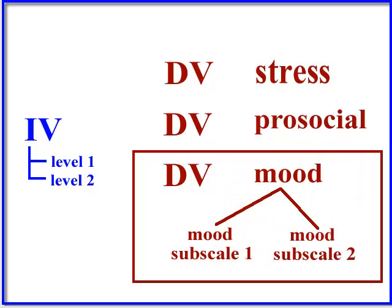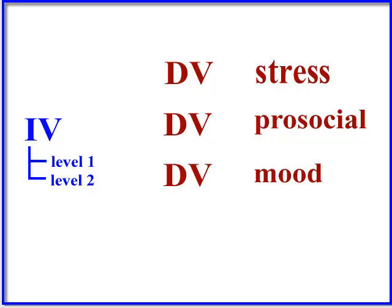Okay, so I would just consider that mood would be one DV made up of two subscales. It's called an aggregated DV. You just add them together. Okay, so this is you, right? One IV, three DVs.